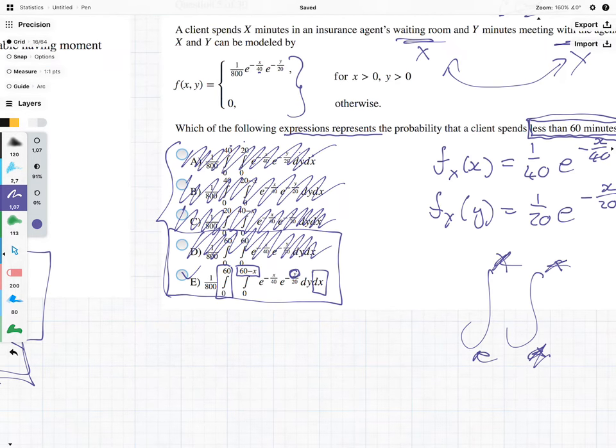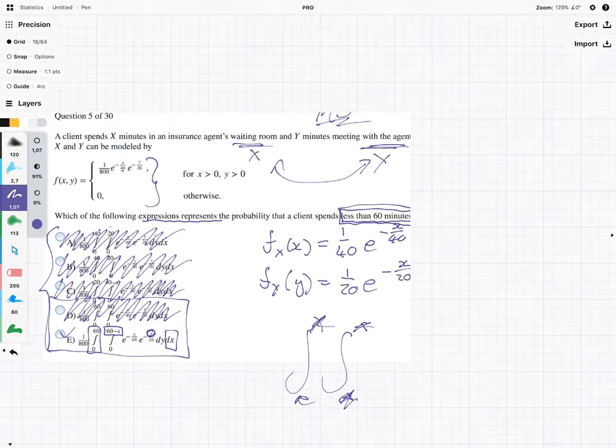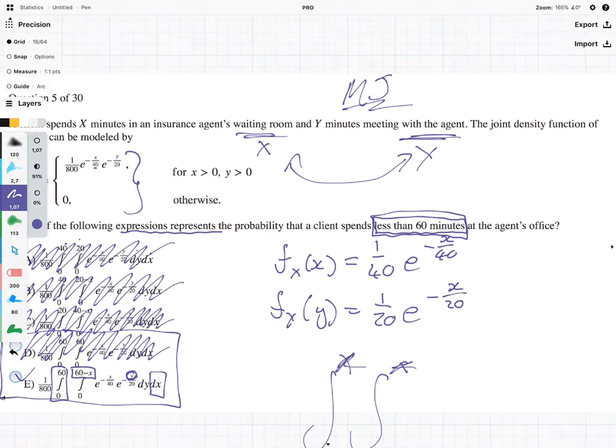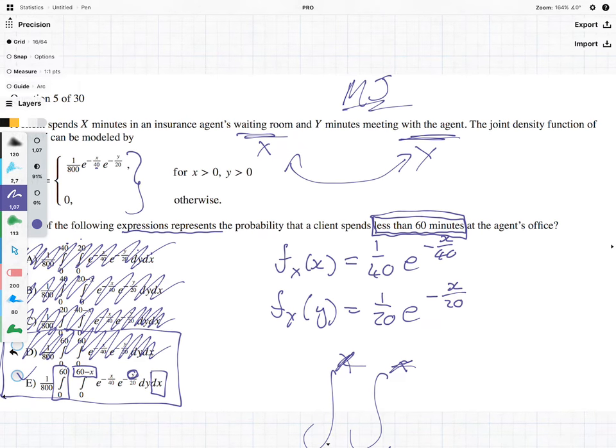So, that is the one we are looking for, and the way to work it out was that the total time is to be less than 60 minutes. So, if X minutes are being spent in the waiting room, in the range of 0 to 60, then from 0 to 60 minus X minutes are spent in the meeting itself.